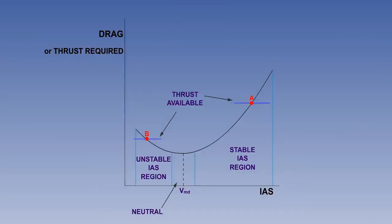Finally, you will notice that the curve either side of VMD is fairly flat. In this region, the neutral IAS area, there is no distinct tendency to either speed stability or instability. The general rule to remember is that above VMD the aircraft will be speed stable, and below it, speed unstable.